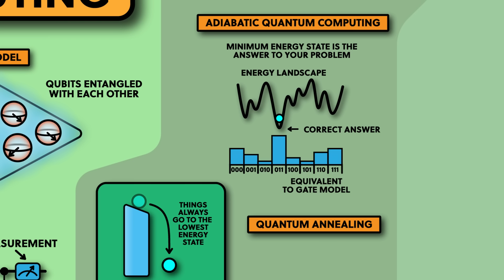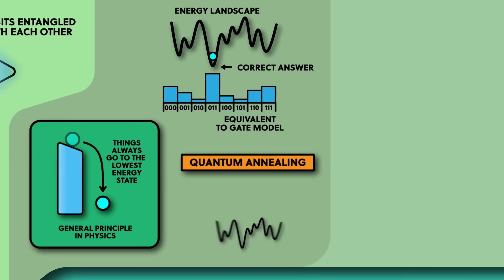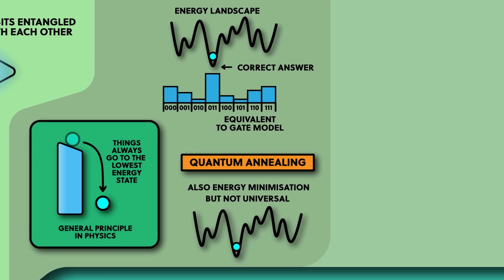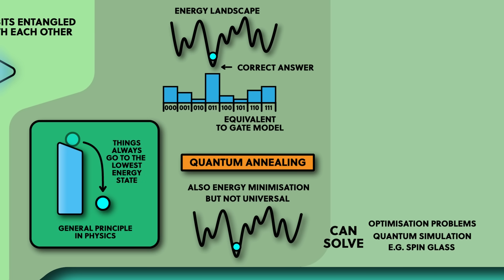Even though adiabatic quantum computing is so different to the circuit model, they have been shown to be mathematically equivalent, and problems can be mapped from one to the other. They're both something called a universal quantum computing scheme, which means that theoretically they can simulate any quantum system. Strongly related to adiabatic quantum computing is quantum annealing, which is not a universal quantum computing scheme, but works on the same principle — the system finds the minimum energy state of an energy landscape that you give it. The reason it's not universal is because it doesn't have the full degrees of freedom to represent any quantum state. But even with this limitation it can still be used to solve certain energy landscape problems like optimisation problems, and simulate certain quantum systems — an example is spin glasses, which are grids of magnetic fields connected to each other. Quantum annealing is the stepping stone to building a universal adiabatic quantum computer.